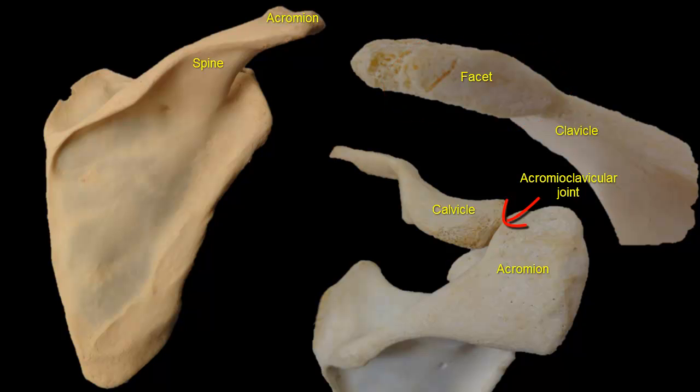Thus, the flattened end of the clavicle does not reach the point of the shoulder. The point of the shoulder is formed by the lateral tip of the acromion of the scapula, not the clavicle.